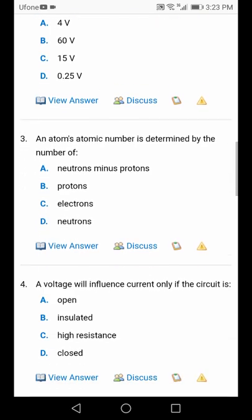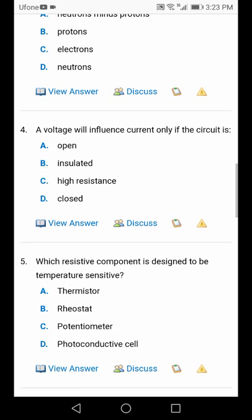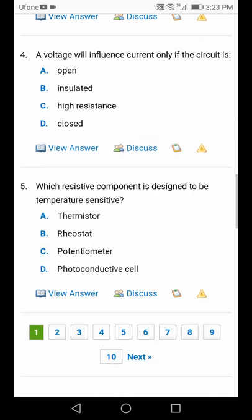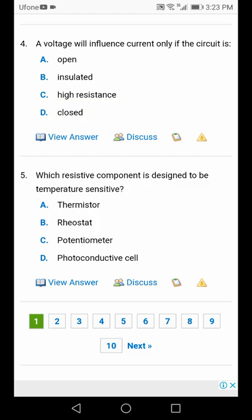An atom's atomic number will tell you the proton, option B. A voltage will influence current only if the circuit is closed, then the voltage will influence the current, option D. Which one is temperature sensitive? Thermistor, because it is a negative temperature coefficient.